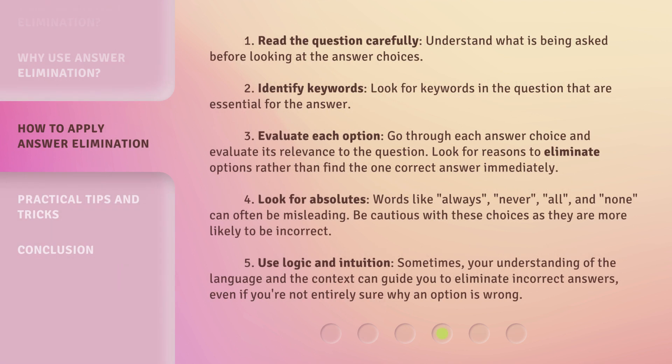Step 1: Read the question carefully — understand what is being asked before looking at the answer choices. Step 2: Identify keywords — look for keywords in the question that are essential for the answer. Step 3: Evaluate each option — go through each answer choice and evaluate its relevance to the question, looking for reasons to eliminate options rather than find the one correct answer immediately.